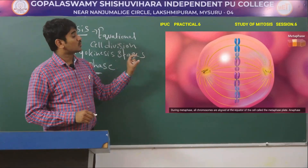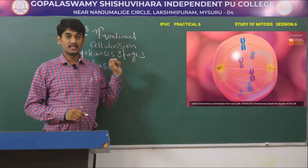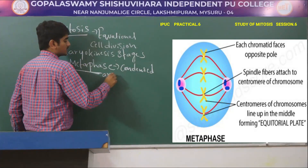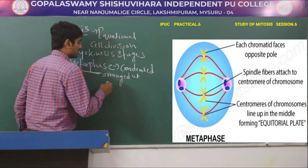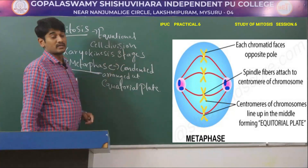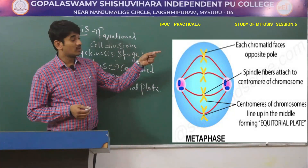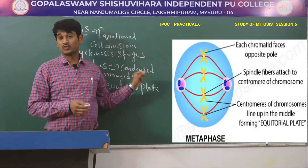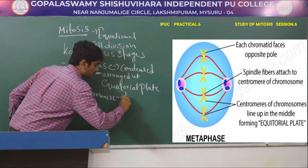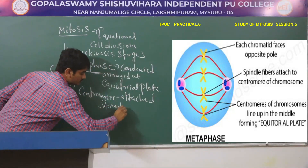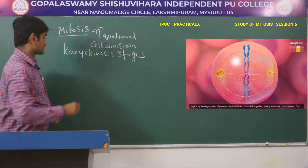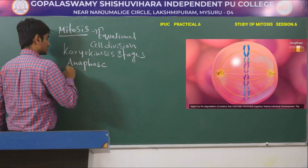The second phase is metaphase. In metaphase, the condensed chromosomes are arranged at the equatorial plate, and the centromeres are attached to spindle fibers. We can observe the chromosomes' centromeres getting attached to spindle fibers at this stage.